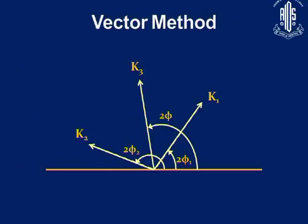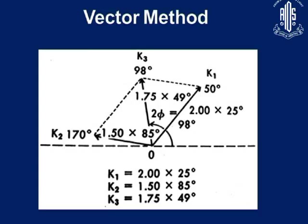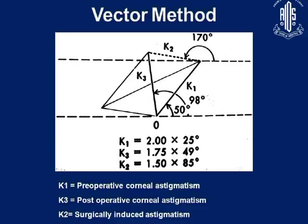The vector method constitutes amplitude and direction. If K1 and K2 are known, with this parallelogram you can calculate K3. Using the same parallelogram with slight modification, if pre-op astigmatism and post-op astigmatism are known, you can calculate the surgically induced astigmatism.